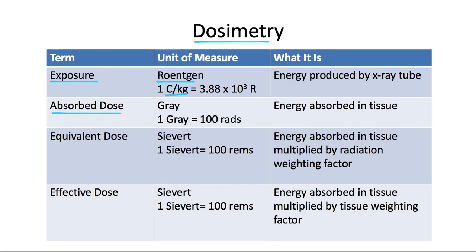Absorbed dose is the energy actually absorbed by human tissues. The SI unit for this is grays, and one gray is equal to 100 rads. The equivalent dose is the absorbed dose taken one step further — it accounts for the type of radiation, whether x-rays, gamma rays, or beta particles. You multiply the absorbed dose by a radiation weighting factor, a number between 1 and 20, which is usually 1 for x-rays. So the number of grays equals the number of sieverts for x-rays, and sieverts is the SI unit for equivalent dose.